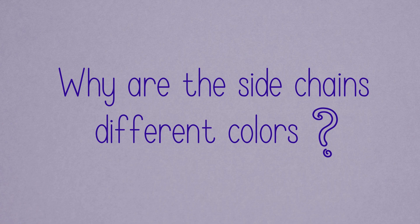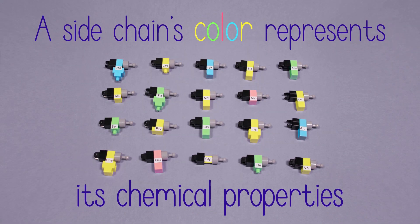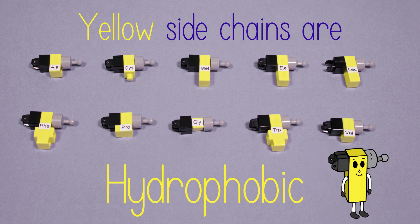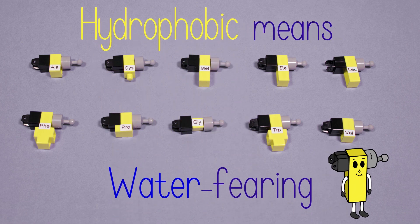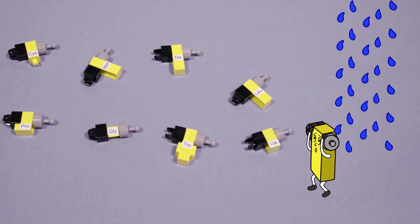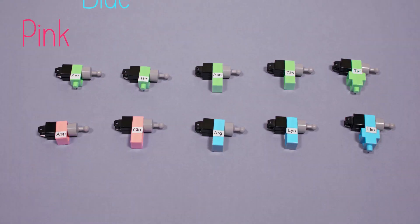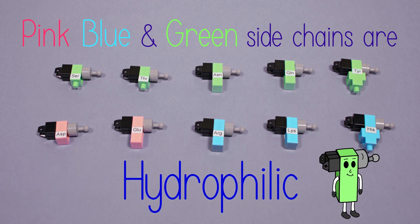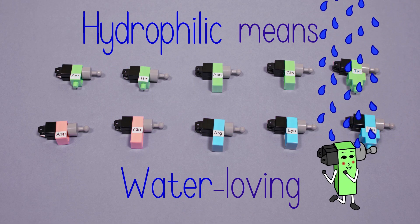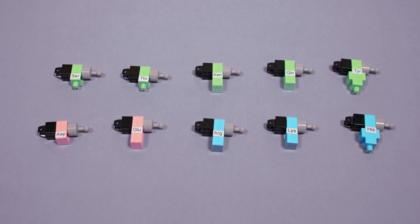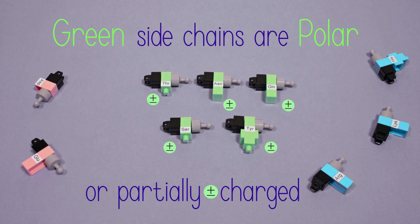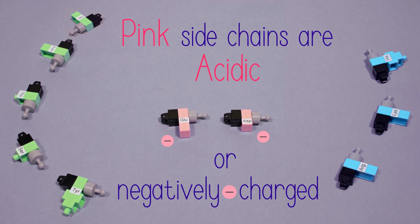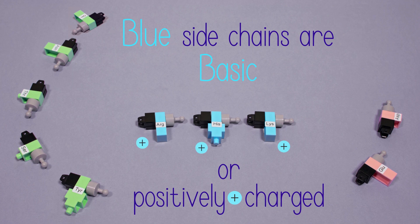Why are the side chains different colors? A side chain's color represents its chemical properties. Yellow side chains are hydrophobic, meaning water-fearing. Pink, blue, and green side chains are hydrophilic, meaning water-loving. Green side chains are polar, or partially charged. Pink side chains are acidic, or negatively charged. Blue side chains are basic, or positively charged.